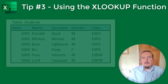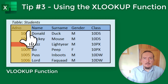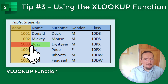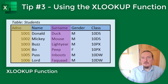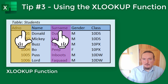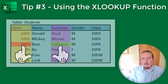We saw last time that VLOOKUP is similar to looking down a list with one finger until you find what you are looking for and then reading across to find the value that you want. XLOOKUP is more like looking down two lists with two fingers, stopping when you find what you are looking for in the first list and then reading off the value at the same place on your second list.